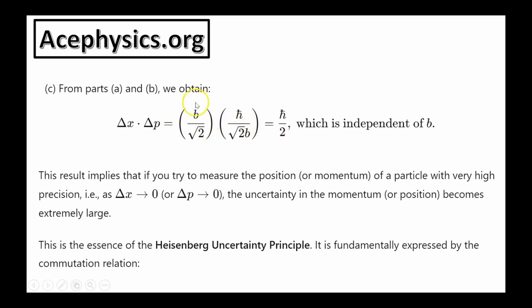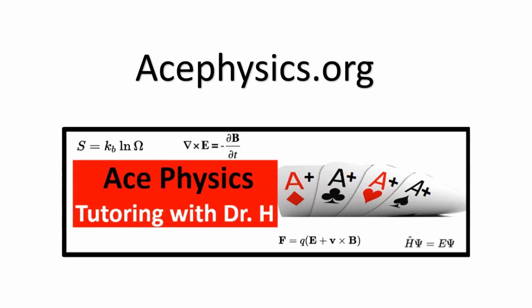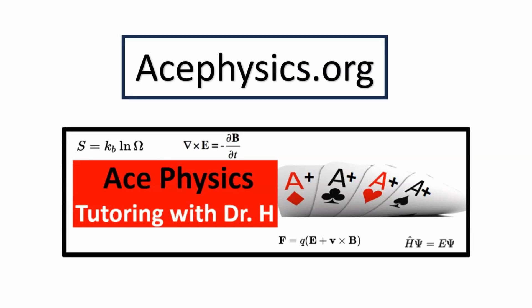Finally, we calculate the uncertainty in x multiplied by the uncertainty in p — this is Heisenberg's uncertainty relation. Taking our result for the uncertainty in x, which is b over root 2, and multiplying by the uncertainty in p, which is h-bar over root 2 times b, the b's on the top and bottom cancel. Root 2 times root 2 is 2, giving us h-bar over 2, which is independent of b. This implies that if you try to measure the position of a particle with very high precision — delta x goes to zero — the uncertainty in momentum becomes extremely large. This is the essence of the Heisenberg uncertainty principle.